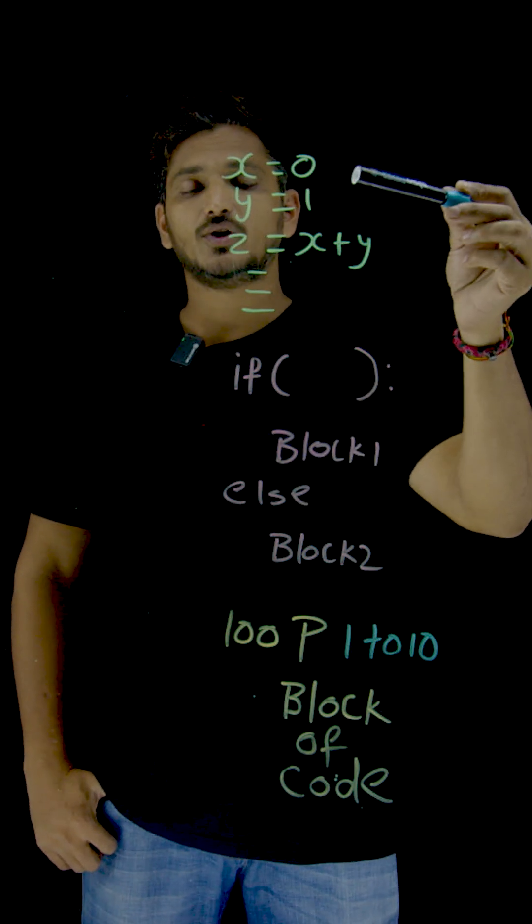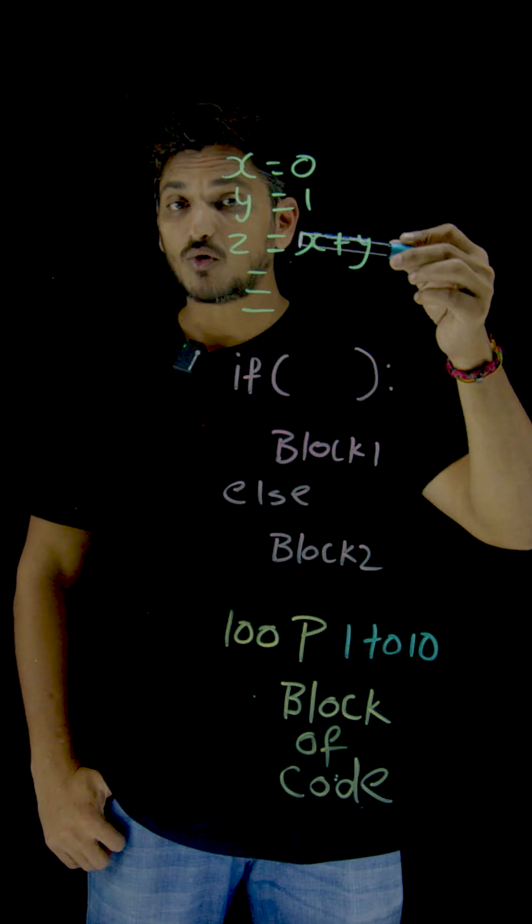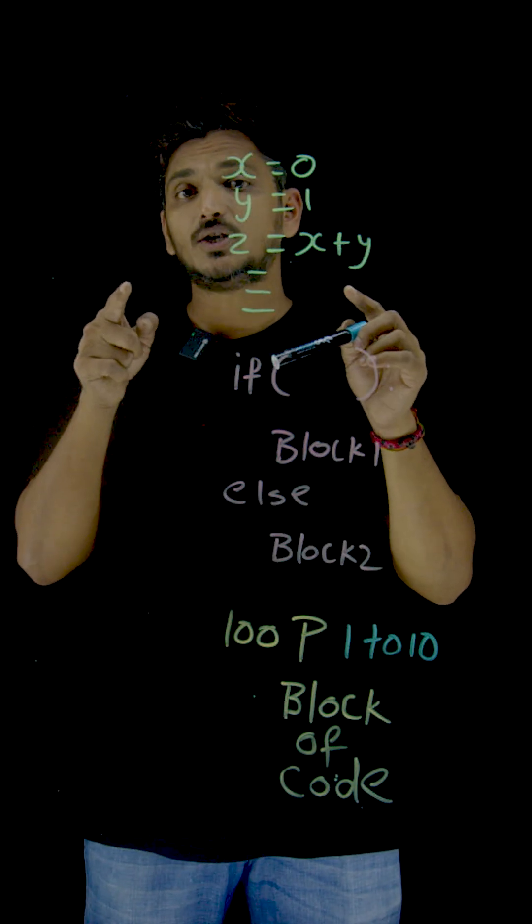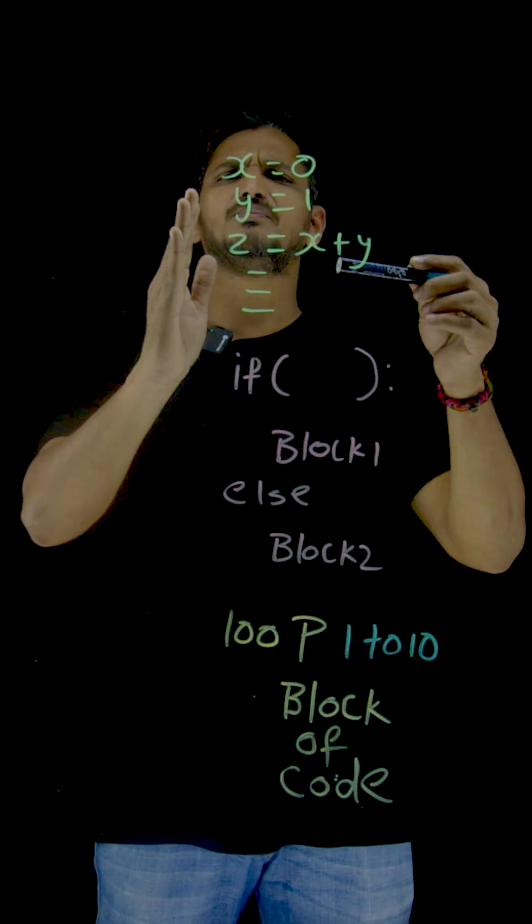First line is going to execute, second line, third line, fourth line, fifth line, sixth line. This is how coding is going to execute. Based on that, you have to write the logic. But this simple step-by-step execution will not help us to build complex things.